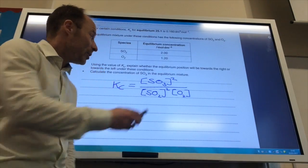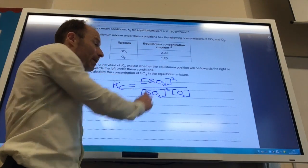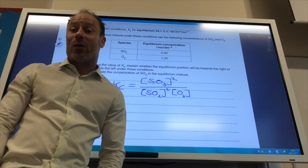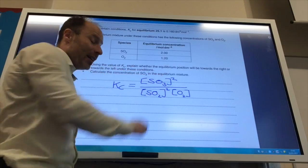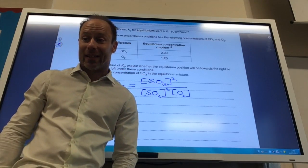Kc is less than 1, which means this figure must be bigger than that figure, which means the equilibrium is towards the left-hand side. It's towards the reactants because I've got more of this than that because Kc is less than 1.